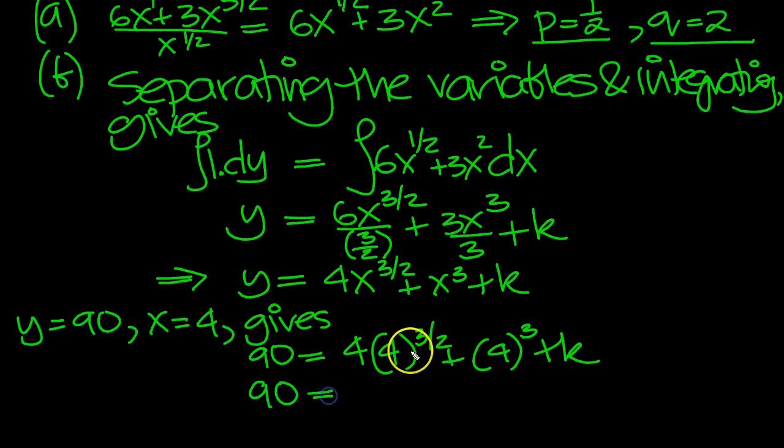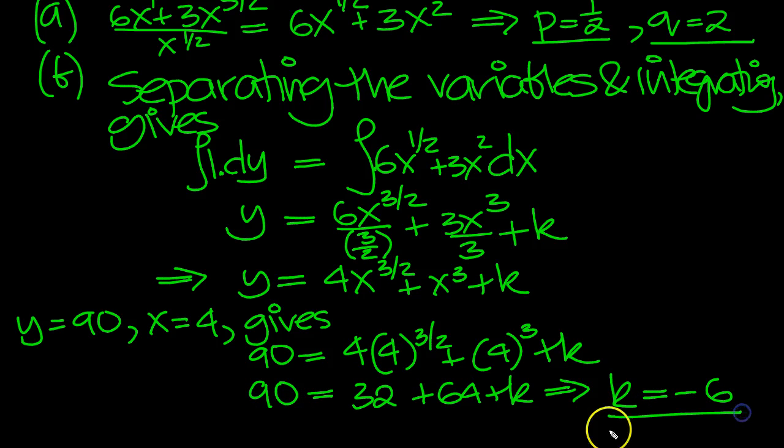So let's simplify this and see what we get. 90 is equal to 4 is 2 squared and 2 squared to 3 over 2 is 2 cubed, which is 8. The other way to look at it is 4 to the half is 2 and 2 cubed is 8. So 4 eighths are 32. And then this is 64. So that tells us that k equals, reading from right to left, 32 and 64 is 96. Move that over. 90 minus 96 is minus 6. k equals minus 6.